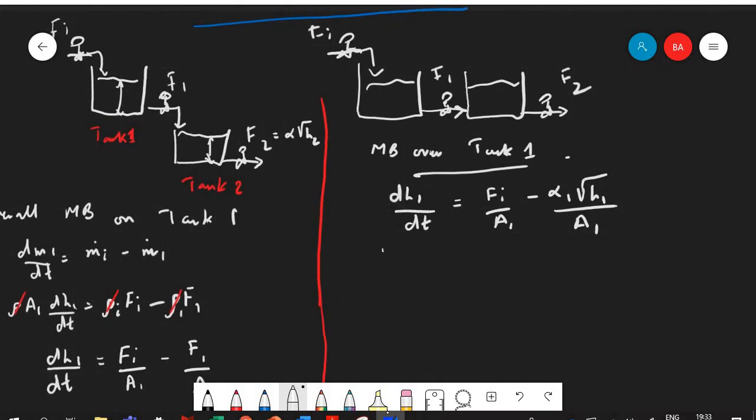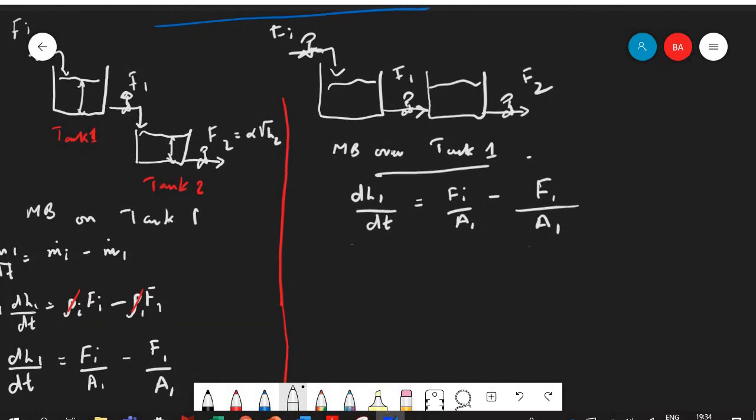However if I'm going to go to the material balance over tank 2, we are going to have—oh oops, so I think we have missed something here. Here actually before going to tank 2, it was F1 over A1. And what did we say? We said that F1 is equal to α1 square root of h1. Actually this was the case for the example that we just have taken but we will consider that this is not right. We cannot do this.